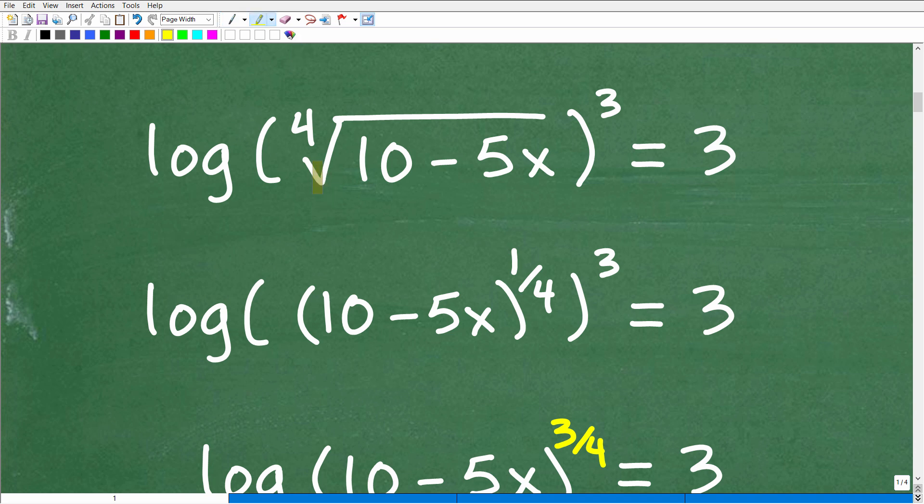All right, so the first thing we want to do is right here, we're dealing with this radical. This is not a square root symbol. I mean, some of you might be saying, it is a square root symbol. Technically, you want to refer to this as a radical because we're dealing with the fourth root here of this. And then we are taking all of this to the third power. So the easiest thing to do is to use what we call rational exponents. So in other words, instead of writing the problem this way, we're going to say 10 minus 5x, all this to the one-fourth power.